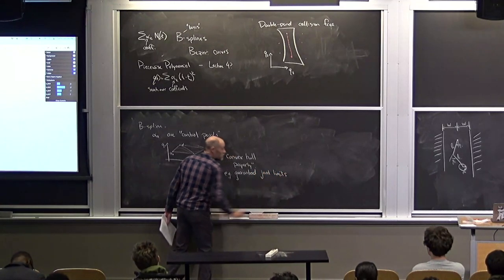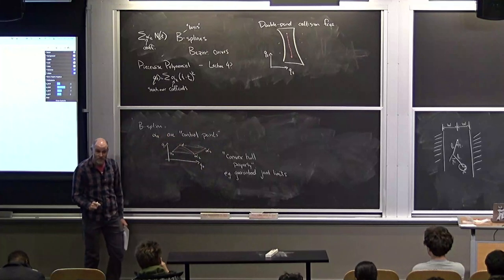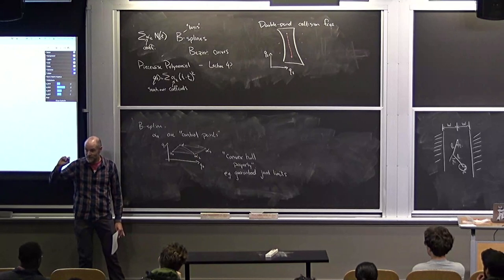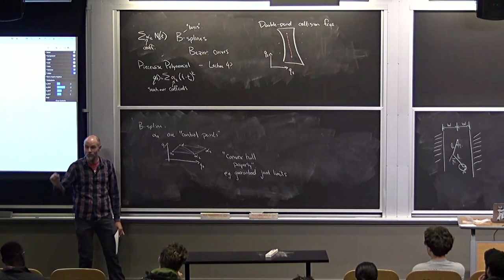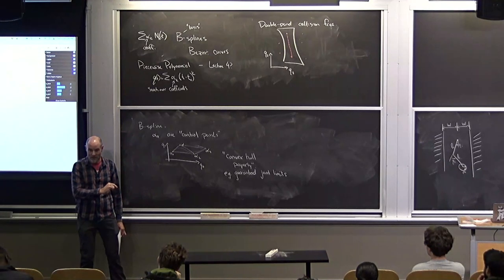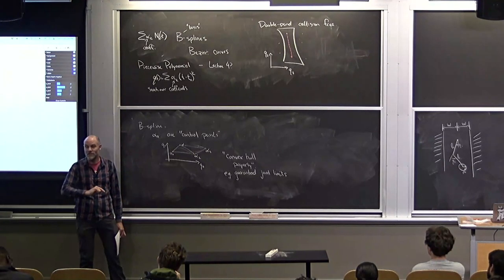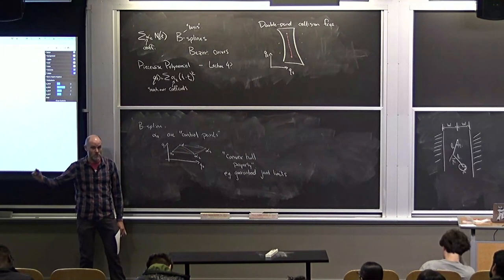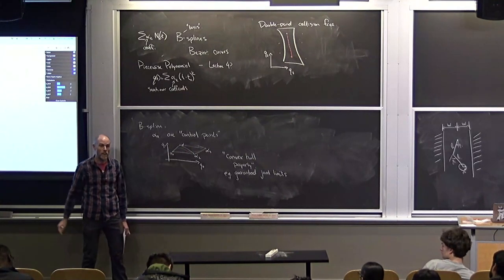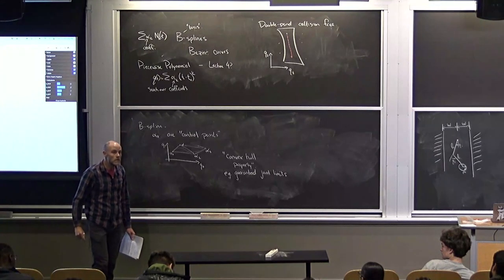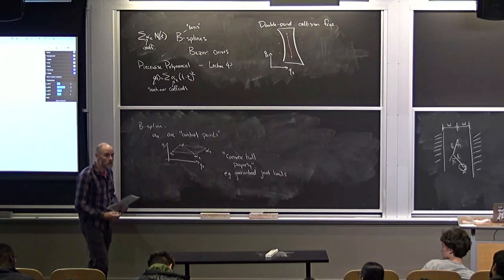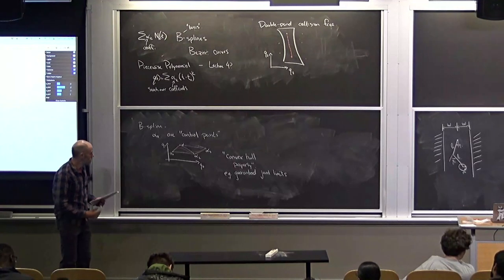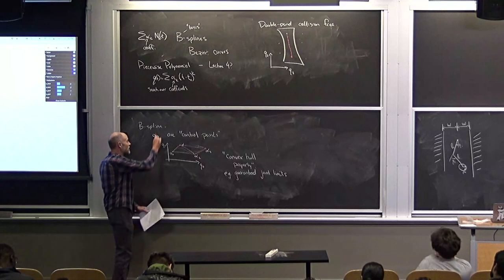It also happens that the time derivative of a B-spline is also a B-spline. So you can add velocity limits that are guaranteed to stay inside velocity limits for all time, and similarly for acceleration limits and so on. B-splines have a dimensionality as well.